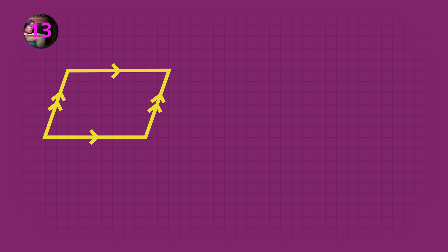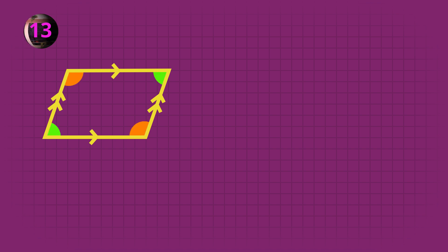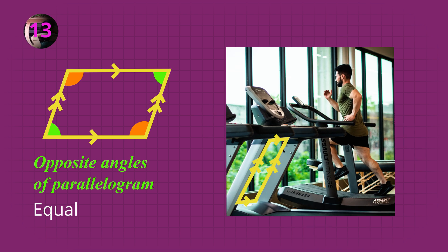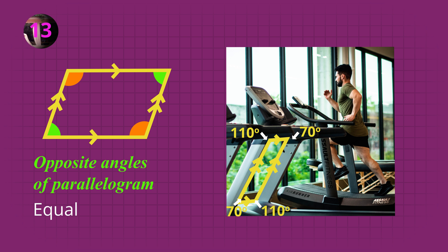For the last rule, here is a parallelogram. Remember that the arrows show the pairs of parallel lines going in the same direction. What do you notice about the angles opposite each other? Yes, they're equal. In this example the two smaller opposite angles are both 70 degrees, and the two larger opposite angles are both 110 degrees.